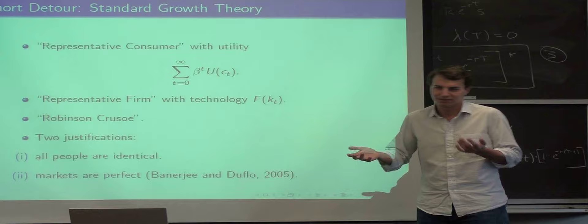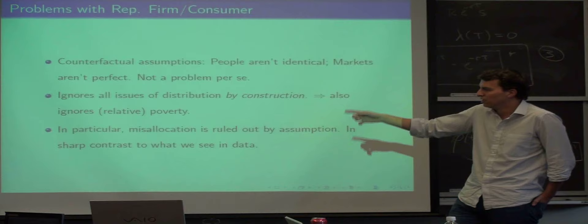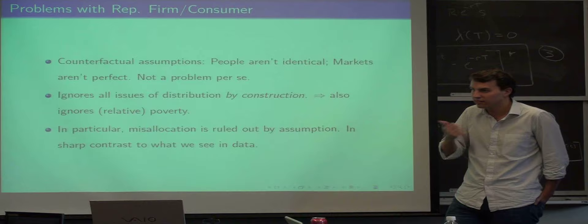One justification is all people are identical, and very clearly they aren't. But if they're kind of identical, it might not matter so much. The other justification is that markets are perfect. This approach, because it either assumes that people are identical or it assumes that markets are perfect, just completely assumes away all misallocation.